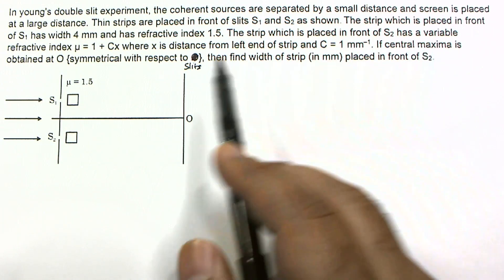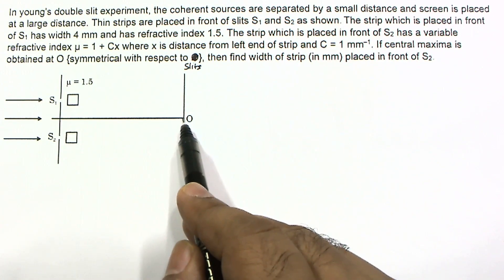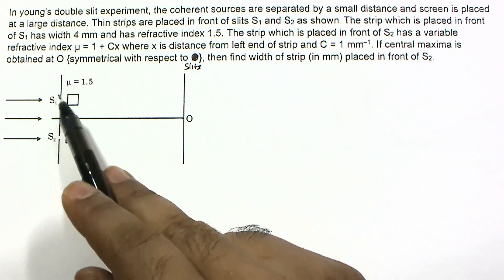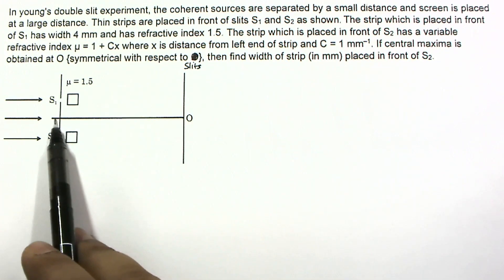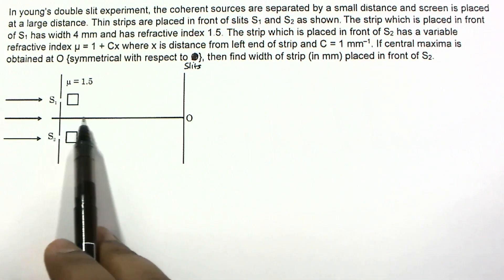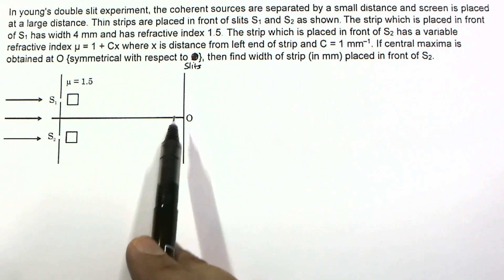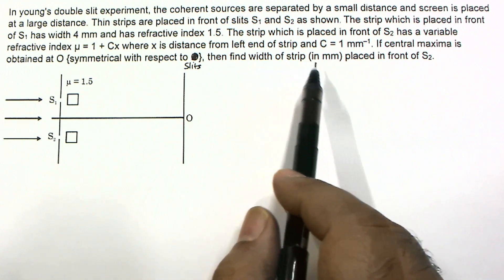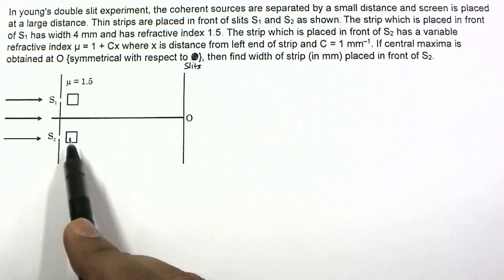If the central maxima is obtained at point O, where O is the point which is symmetrical with respect to the slits — meaning it lies on the perpendicular bisector — then find the width of the strip placed in front of S2.